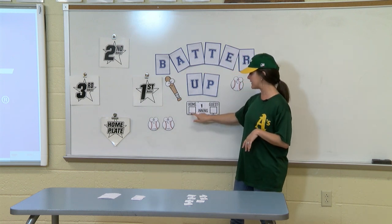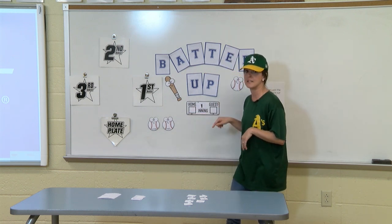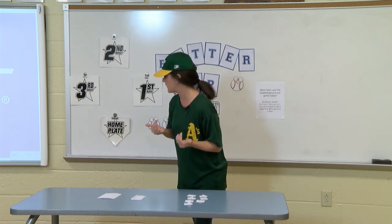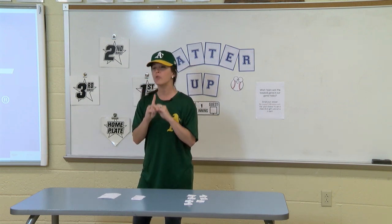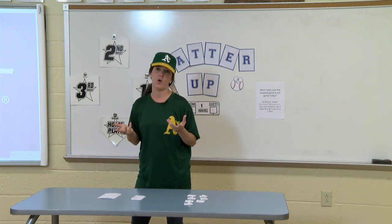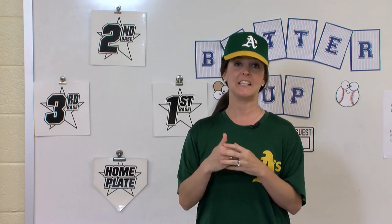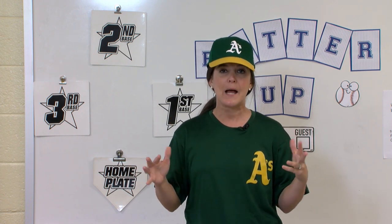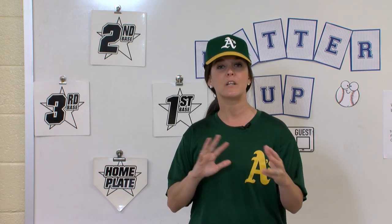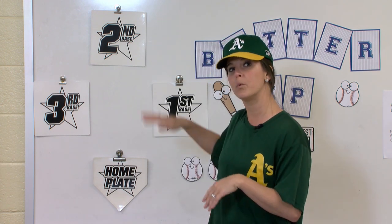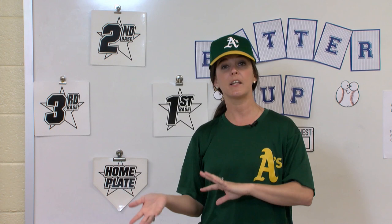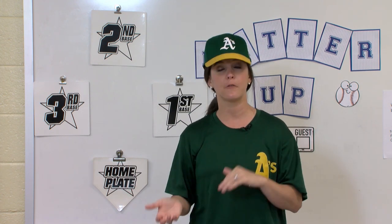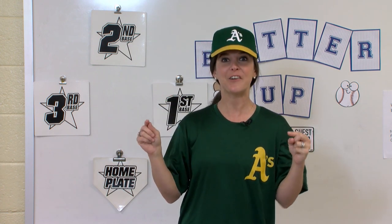I've got a scoreboard going. The A's are the home team and the Angels are the guest team. Normally in baseball you need three outs before the next team bats, but we're going to play differently because we have limited time. We're just going to take turns — the Athletics take a turn, then the Angels — and flip-flop back and forth. Sound good? All right, let's play ball.